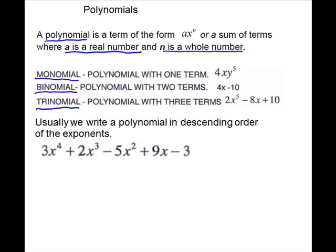Usually we write a polynomial in descending order of the exponents. This polynomial is written in descending order. Notice it starts with x to the 4th, x to the 3rd, x to the 2nd, x to the 1st, and your constant term will go last.